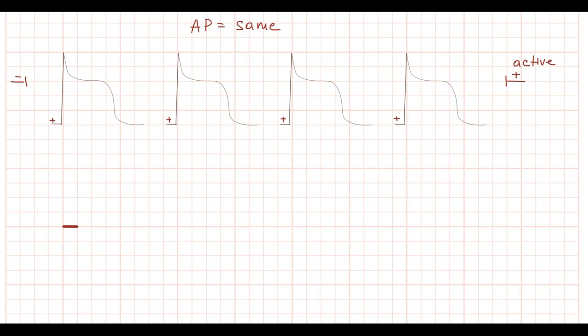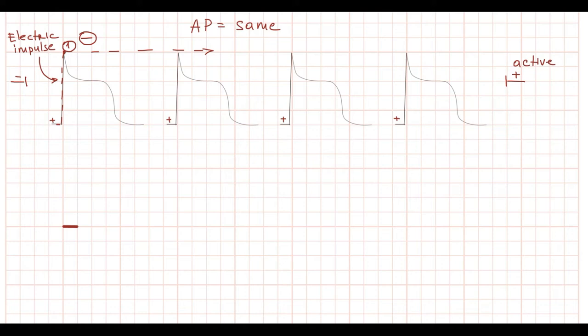At the first moment, an electric impulse reaches the first cell. The cell depolarizes and changes its charge to negative. We have one negatively charged cell and three positively charged cells. There is a vector of depolarization orientated from left to right — from the depolarized cell to the non-depolarized cell, aligned from minus to plus. Because the vector is orientated towards the positive electrode, the electrode registers elevation from the isoelectric line.